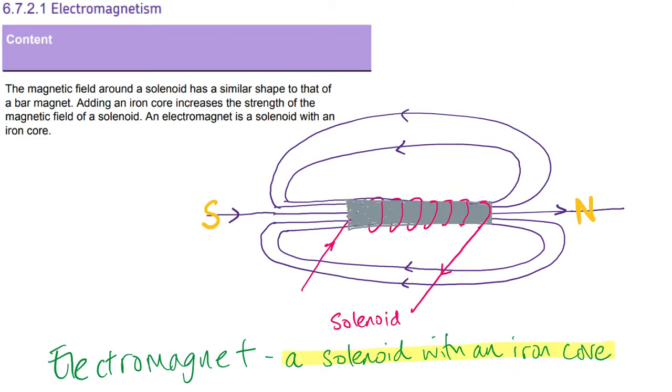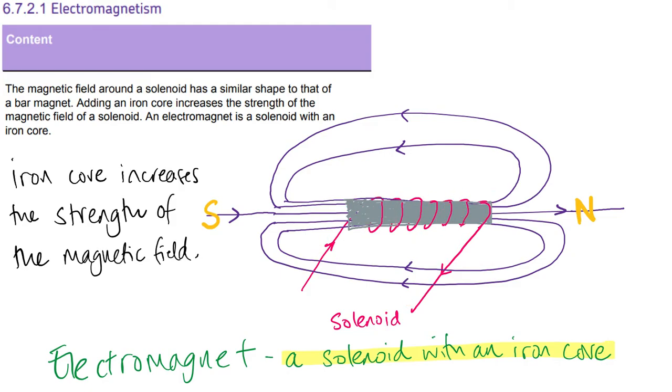Now, if we wanted to increase the strength of our electromagnet even more other than to increase the current, what we can also do is add what's called an iron core. And that's just a piece of iron that feeds through the middle where the coils of wire, the solenoid, wrap around it. So officially, our definition for an electromagnet is a solenoid that has an iron core.